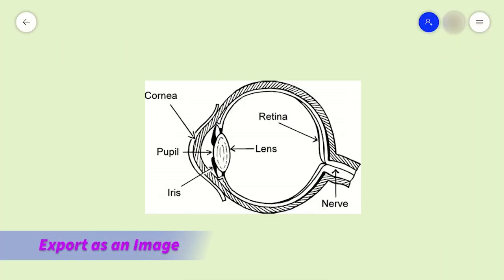To export the whiteboard canvas as an image file, click on the settings menu and select Export.